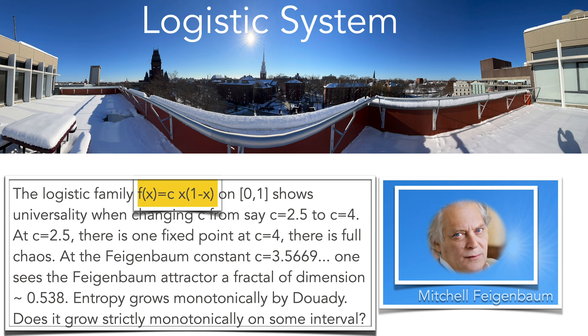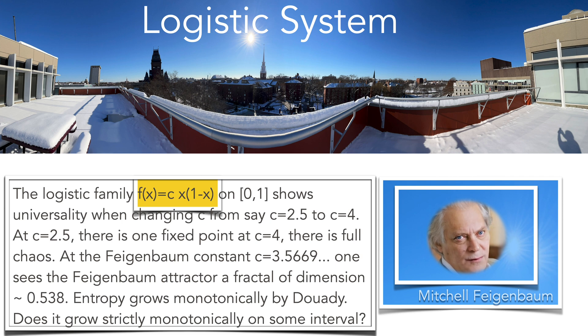The logistic system is a quadratic map on the unit interval, depending on a parameter. Mitchell Feigenbaum observed universality, and Oscar Lanford proved it computer-assisted. There are still many open questions — for example, how large the parameter values are with positive Lyapunov exponents, or whether the entropy graph is a devil's staircase, meaning that there are intervals where the topological entropy grows in a strictly monotonic way. In the next slide we see the bifurcation diagram.